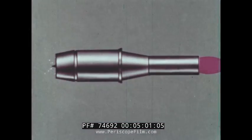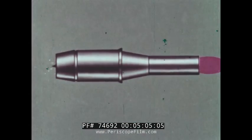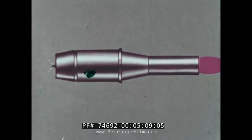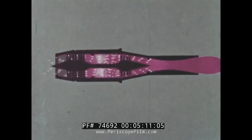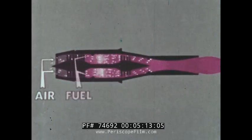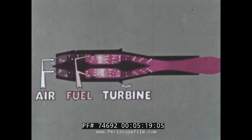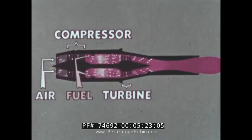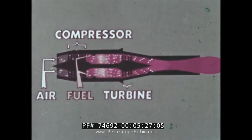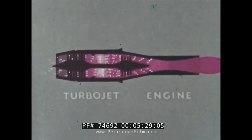However, jet engines must often be operated when they are not moving through the air. To get enough air to burn the fuel and produce thrust, some of the power produced by the engine is used to run a turbine. The turbine is connected to an air pump or compressor, which brings in the great quantity of air needed by the engine. The turbine gives this engine its name: the turbojet engine.